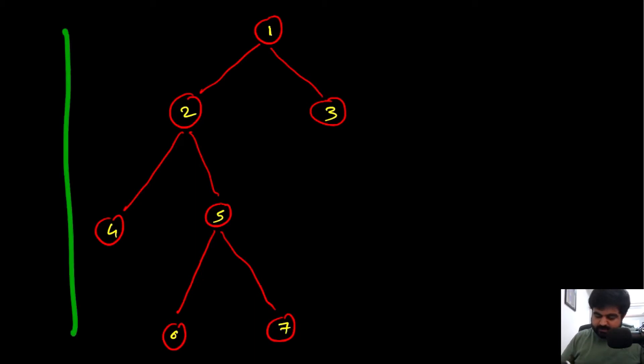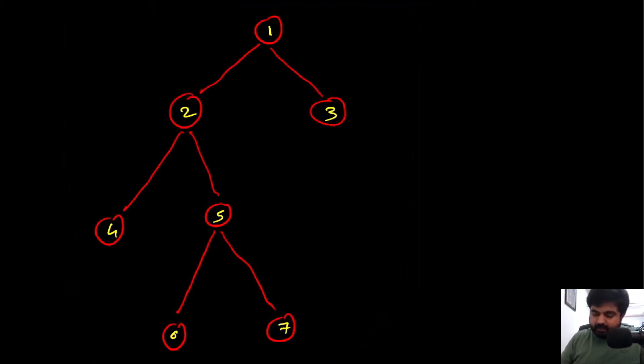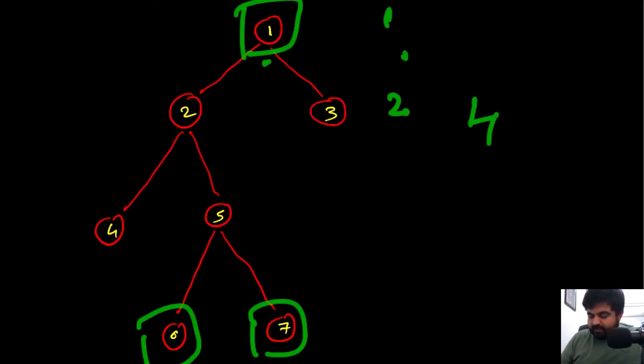Suppose this is the input we are given and we are trying to find the maximum depth for this particular tree. If you want to find the maximum depth for this tree, the answer is going to be 4 because of these two nodes. We can see it clearly over here: the value is 1, this is 2, this is 3, and this is 4, and this is the answer we need to return.